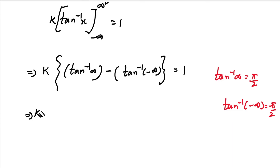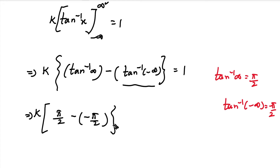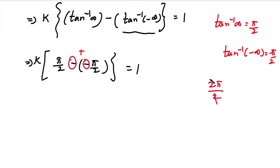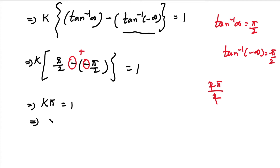Substituting into the equation: k times [pi/2 minus (minus pi/2)] equals 1. Since minus into minus gives plus, we get k times [pi/2 plus pi/2] equals 1. That is k times 2pi/2 equals 1, and the 2's cancel, giving k times pi equals 1. Therefore, k equals 1 divided by pi.